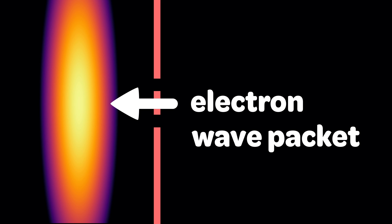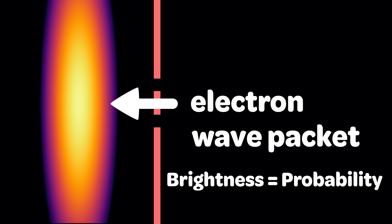The yellow, orange and purple colored bunch at the left side is an electron wave packet. The brighter the color is, the more chance to observe the electron at the position. It starts at here and moves from the left to the right.